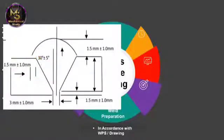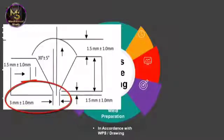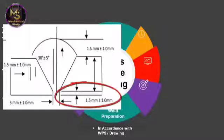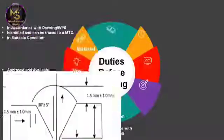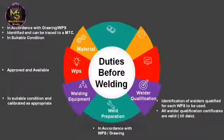Root gap in this image is shown as 3.0 mm with a tolerance of plus or minus 1 mm, meaning root gap should be between 2 mm and 4 mm. The last dimension is root face — it is 1.5 mm with a tolerance of plus or minus 1 mm, meaning root face should be between 0.5 mm and 2.5 mm.